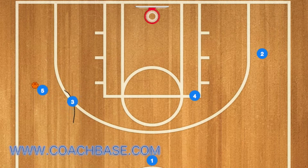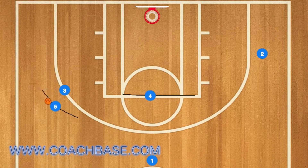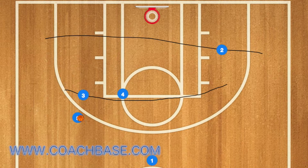Now three will set a screen for five. Five will use that screen and pass the ball to player one, while four sets up a screen in the left elbow area for player three.